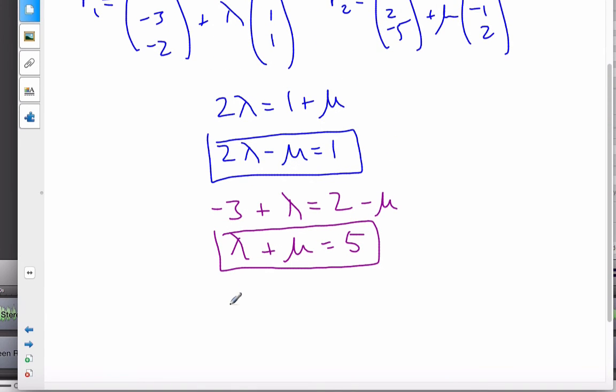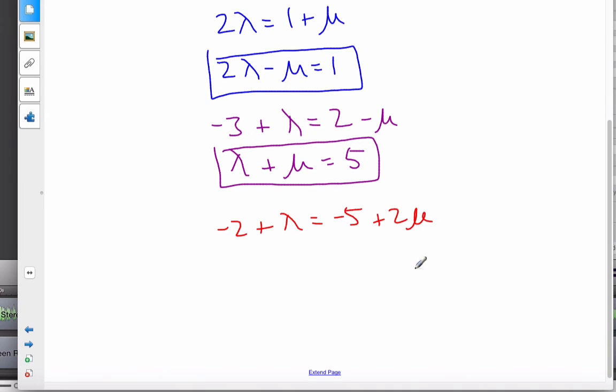And the last one we'll do is the z component. And so, I get negative 2 plus lambda equals negative 5 plus 2 mu. Rewriting that, I get lambda minus 2 mu is equal to 3. So, I have 3 equations, 2 unknowns.